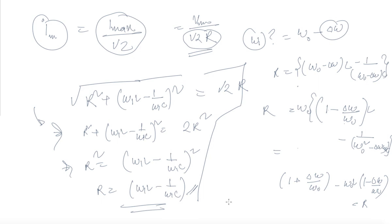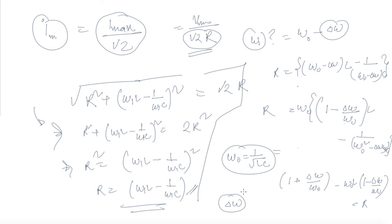Therefore, twice del_omega times omega_naught·L equals R, and since omega_naught equals 1 by root(LC), we get del_omega equals R upon (2L). Therefore twice del_omega equals R by L.